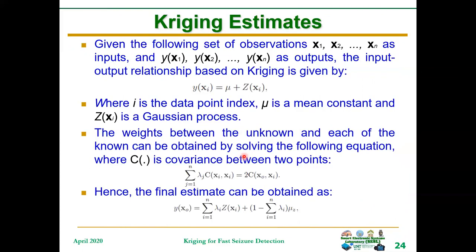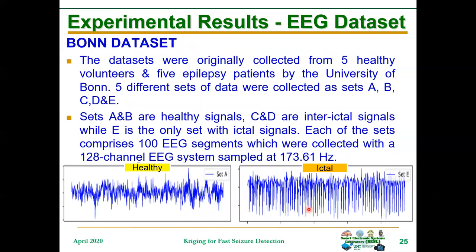After getting the semivariogram model plotted, we perform the actual estimation. For the constraint of time, I won't be able to explain all the equations — you can get the details from the paper. The dataset used for this work is popularly known as the Bonn dataset. It was collected from EEG patients and seizure patients in Germany, at the University of Bonn. It has a collection of EEG signals and seizure signals as well as interictal signals, collected with a 128-channel EEG system at a sample rate of 173.61 Hz.